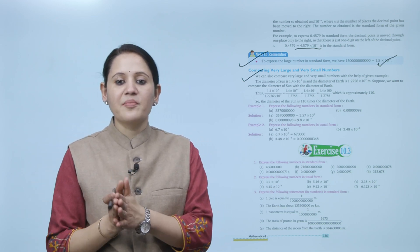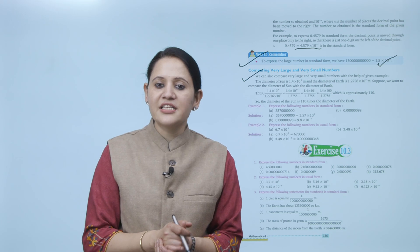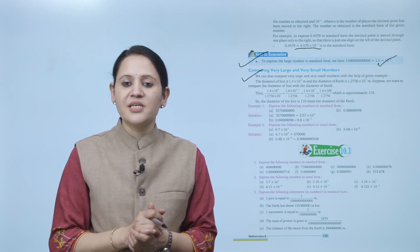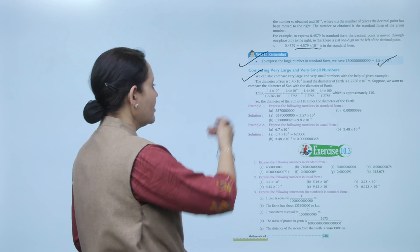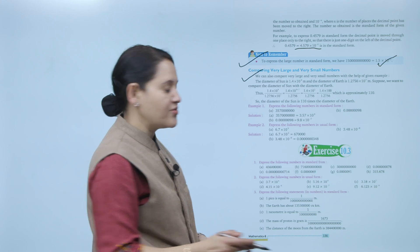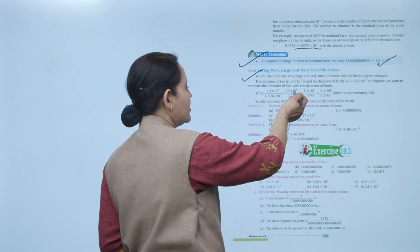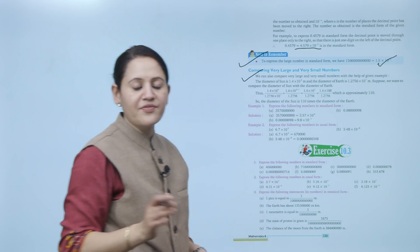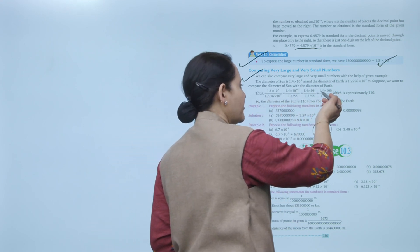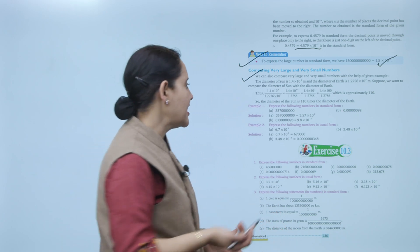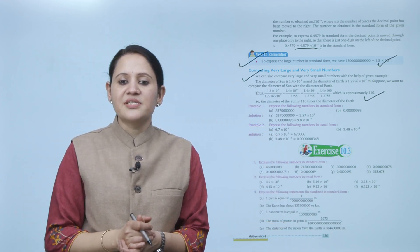We can also compare very large and very small numbers. For example, the diameter of the sun is 1.4 × 10^9 meters and the diameter of the earth is 1.2756 × 10^7 meters. To compare, we compute (1.4 × 10^9) / (1.2756 × 10^7) = (1.4 / 1.2756) × 10^(9-7) = 1.4 × 10^2 ÷ 1.2756 ≈ 110. So the diameter of the sun is approximately 110 times the diameter of the earth.